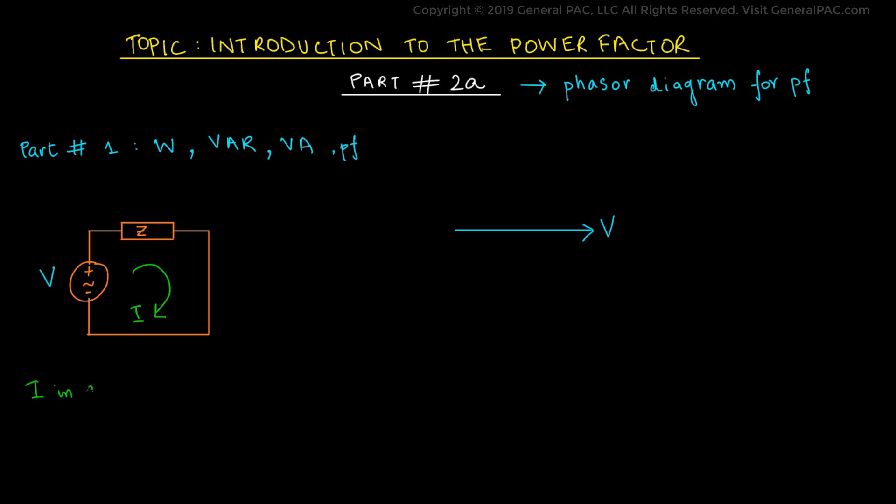We need to keep in mind that the current flowing in an AC circuit has two components. The component which is in phase with the voltage as drawn in the figure is called the active component, while the component which is 90 degrees out of phase with the voltage is called the reactive component.